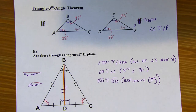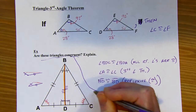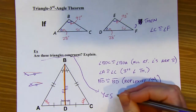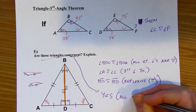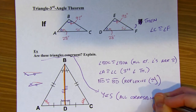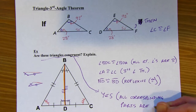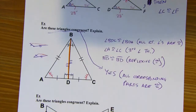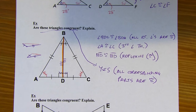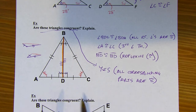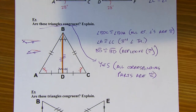So are these triangles congruent? Yes, they are, because all corresponding parts are congruent. Going through this chapter, there are shortcuts you can use with triangles where you don't have to find all corresponding parts. But for now, that's all we have. A big part of the rest of the chapter will explore shorter ways to get to congruent triangles.